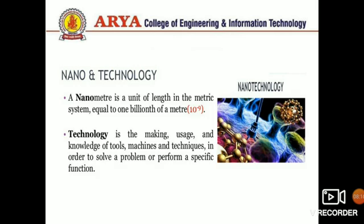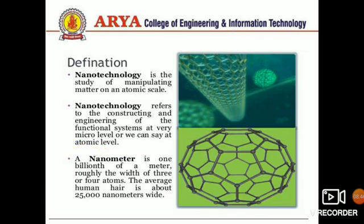Nanotechnology is divided into two words: nano and technology. A nanometer is a unit of length in the metric system equal to one billionth of a meter, i.e., 10 to the power minus 9 meters. Technology is the making, usage, and knowledge of tools, machines, and techniques in order to solve a problem or perform a specific function. Nanotechnology is the study of manipulation of matter on an atomic scale — constructing and engineering functional systems at a very micro level, or atomic level.